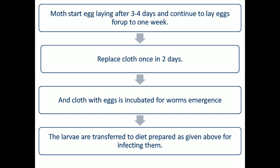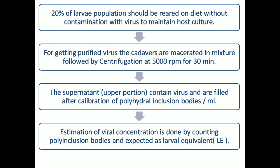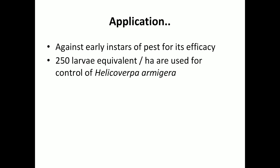Replace the cloth once every 2 days. The cloth with eggs is incubated for worm emergence, then the larvae are transferred to the prepared diet for infection. The population is divided 20-80%: the 20% are reared on diet without virus inoculum to maintain the host culture, and the remaining 80% are given the viral inoculum. For obtaining purified virus, the cadavers are macerated in a mixture, then centrifugation is done at 5000 RPM for half an hour. The supernatant contains the virus and is calibrated by counting the polyhedrin inclusion bodies to determine the larval equivalent (LE).